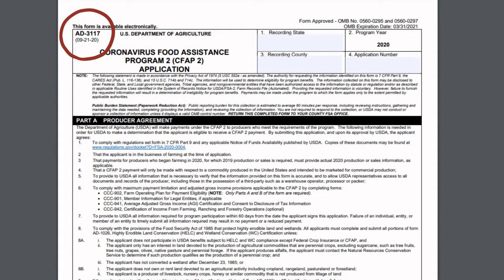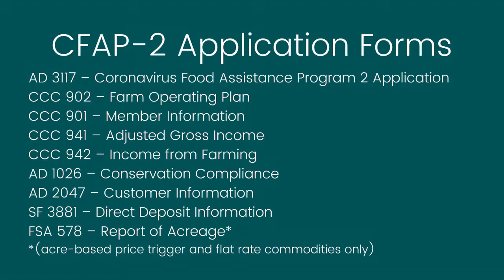In addition to the application specific to CFAP II, which is form AD 3117, farmers will need to compile and submit additional forms and records. The following is a list of forms farmers may be required to fill out. However, some forms only need to be completed depending on a farmer's individual situation or commodity. Although this may seem like an extensive or time-consuming list, farmers who have worked with FSA in the past or who applied for CFAP I will likely already have this information on file.